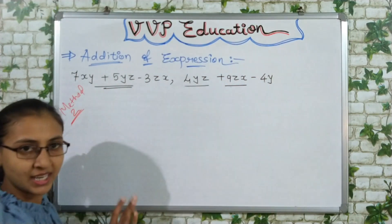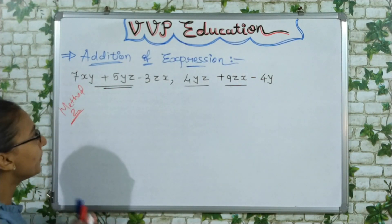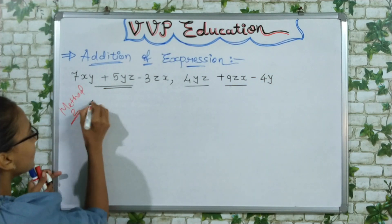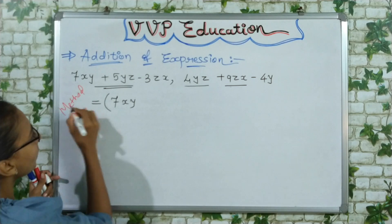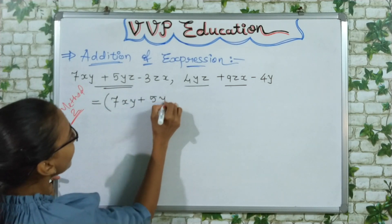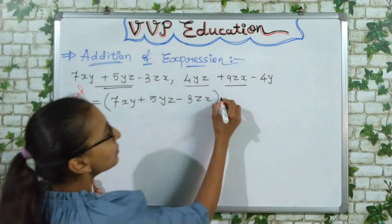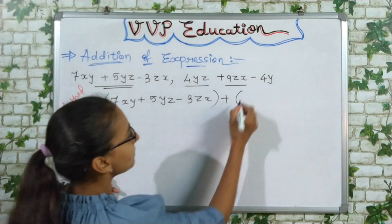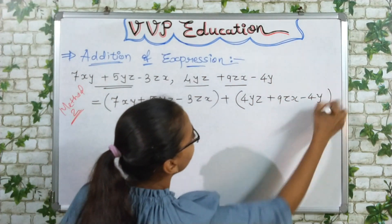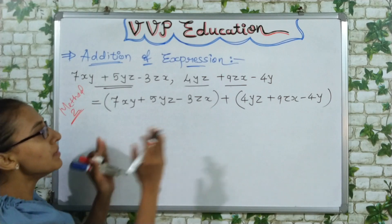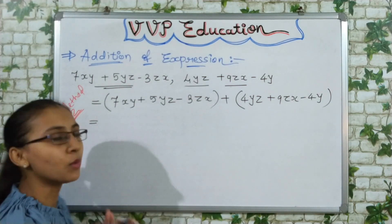I have taken the same two expressions. To add them, I will first put the first expression in brackets: 7xy plus 5yz minus 3zx. Then I add the second expression in brackets: 4yz plus 9zx minus 4y. Since this is addition, no sign changes occur inside the brackets — we simply remove the brackets and keep all terms as they are.